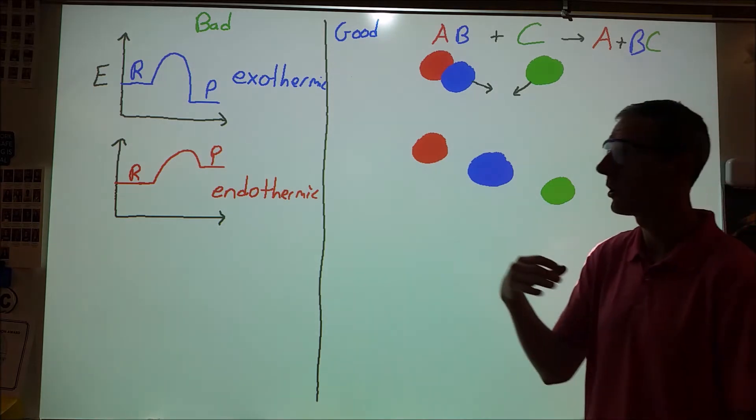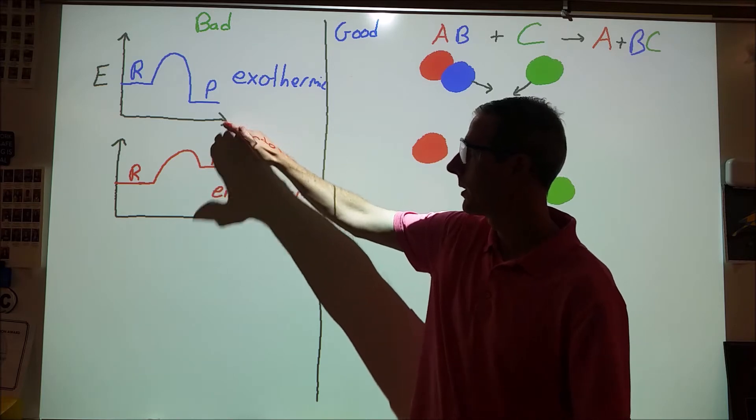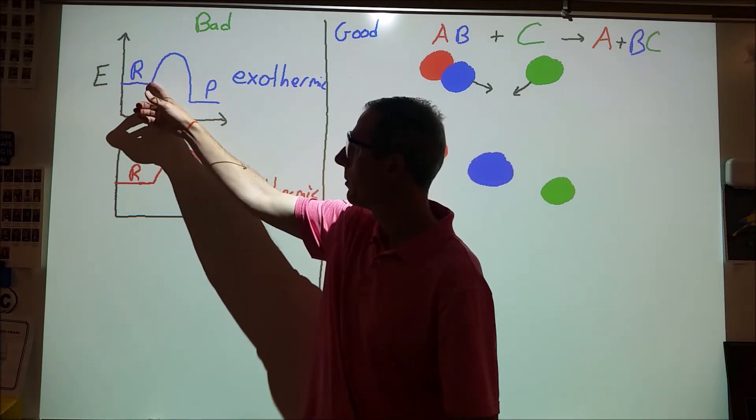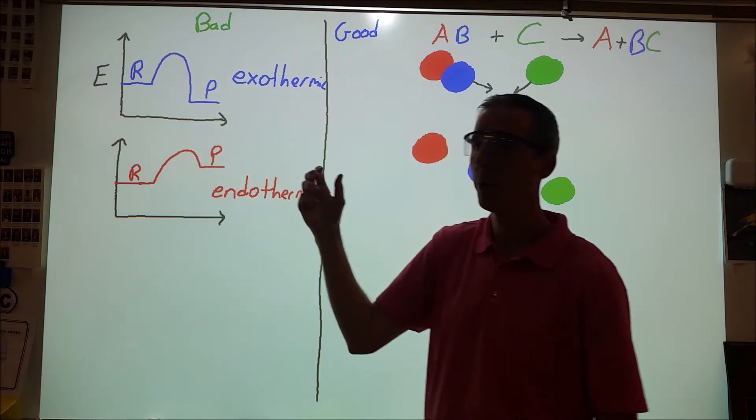So when I first started teaching, we would do a really simple presentation for reaction energy diagrams where we would just have one like this, one like this. We would talk about that the reactants have a certain amount of chemical energy, they react, something happens, something changes, and the products have a new amount.